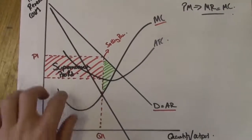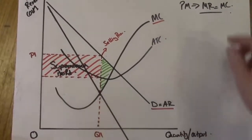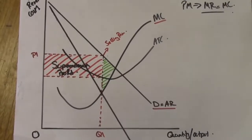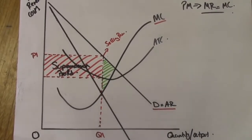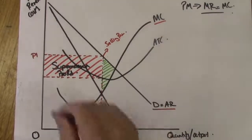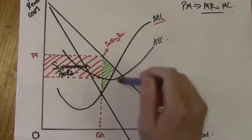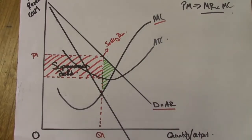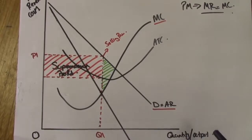From our last diagram, which is on the screen, we were looking at the basic monopoly diagram making supernormal profits and we looked at some of the characteristics behind supernormal profits. Again, know your basic structure of MC, ATC, AR, and MR. We're going to look at a slightly more complicated monopoly diagram now.